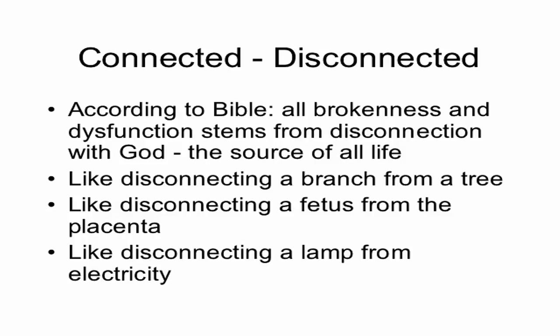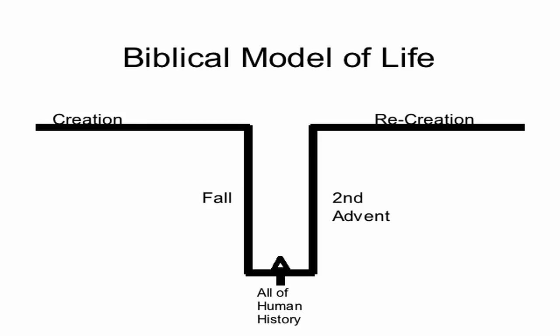A biblical model of life, seen in the biblical worldview map shared before, diagrams some of this: creation was a time for wholeness, it was a time for connection, it was a time for functionality. The fall brought with it a certain amount of dysfunctionality—as a result of disconnection, and the result was brokenness, no longer wholeness. We have lived all of human history in the place of brokenness, disconnection, disintegration, dysfunction—and that's all we know. We've never seen a fully whole, fully healthy, fully unbroken, integrated, connected human being.